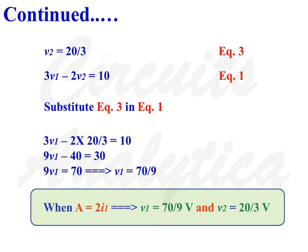Substituting V2 equals 20/3 into Equation 1: 3V1 minus 2 times (20/3) equals 10. So 9V1 minus 40 equals 30, giving 9V1 equals 70, therefore V1 equals 70 divided by 9. Therefore, when A equals 2I1: V1 equals 70/9 V and V2 equals 20/3 V, where A is the current sourced by the dependent current source.